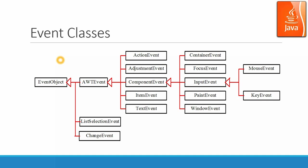We would like to look at the event classes. Event classes are the data classes that carry the event information for each activity that happens in your event-driven programming environment. The top level is event object, and you have AWT events, list selection event, and change event. Change event is for a variable in a certain object. For AWT events, these events happen in the GUI, such as action event, adjustment event, component event, item event, and text event.